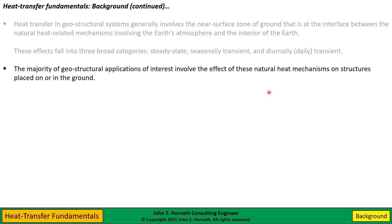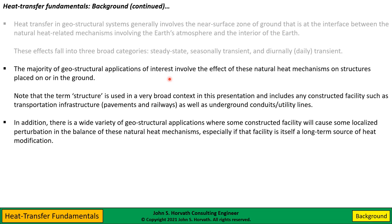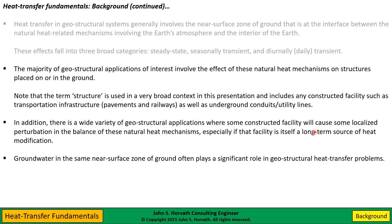The majority of geostructural applications of interest involve the effect of these natural heat mechanisms on structures placed on or in the ground. In this presentation, I use the term structure in a very broad context — not just a building, but any constructed facility. This could be transportation infrastructure such as a pavement or railway, as well as underground conduits and utility lines. There are also a wide variety of geostructural applications where some constructed facility will itself cause some localized perturbation in the balance of these natural heat mechanisms, especially if that facility is a long-term source of heat modification.